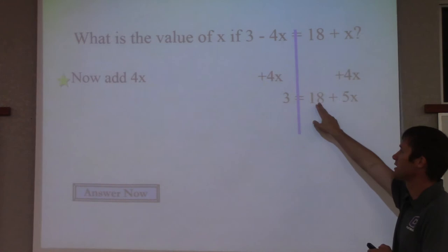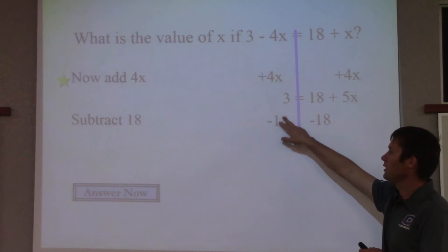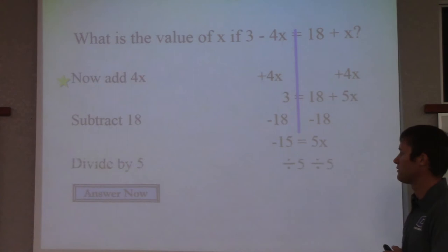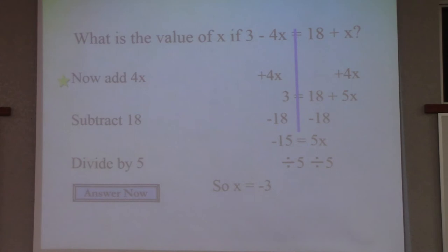Now we can subtract, get rid of the 18 by subtracting it. We have 3 minus 18 is negative 15 equals 5x. Then to get rid of the 5, we divide by 5. So x is equal to negative 3.